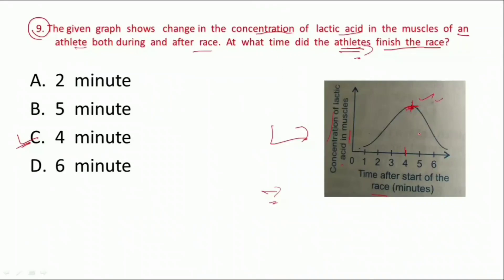Jab hum bahut fast running karte hain, to body ke andar anaerobic respiration hota hai, jiski wajah se body mein lactic acid jama hota hai. Aur yahan is figure mein dekho — at about 4 minutes, concentration lactic acid ki maximum hai. Jab athlete race finish karega, to lactic acid ki concentration decrease honi start ho jaayegi. Yahan par jo concentration thi, woh decrease honi start ho gayi. So answer option C — 4 minutes.